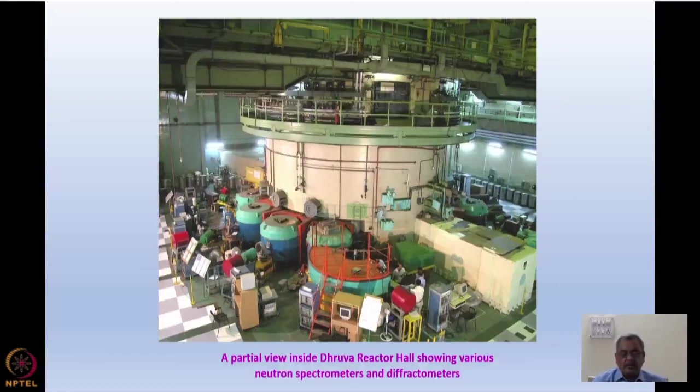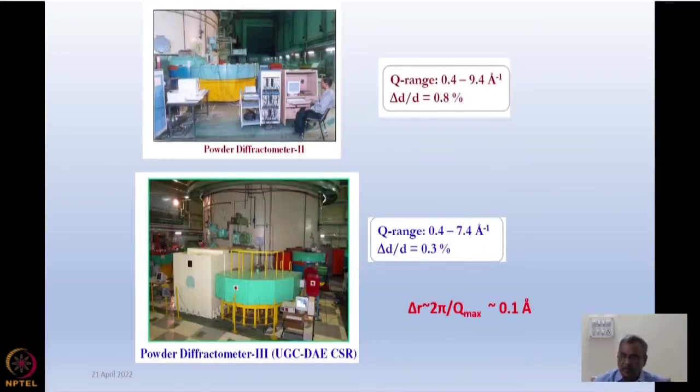All over the world, possibly neutron magnetic diffraction is one of the major activities in the research reactors. So but I show you the two instruments which are available at Bhabha Atomic Research Center, which have been used extensively by my colleagues. So both of them are based on position sensitive detectors. The one instrument which is run by solid state physics division of Bhabha Atomic Research Center, the Q range is typically around you can say 0.5 to 10 angstrom inverse. We do need a resolution to resolve peaks which are close by. This instrument has got a resolution of around 0.8 percent.